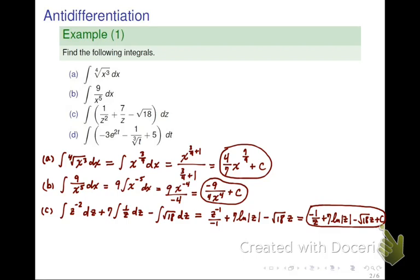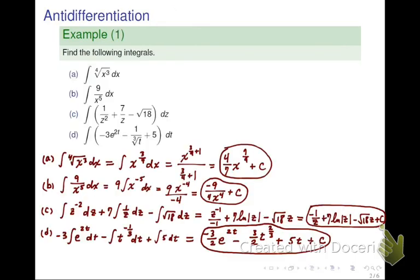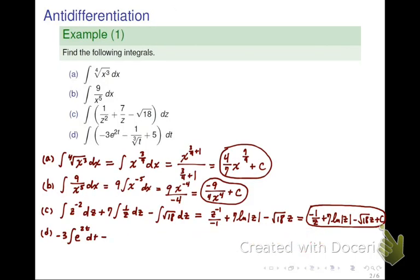For the fourth part, part D, we pretty much proceed with a similar process. We split the integral into three parts. The first part is simply integral of negative 3 e to the 2t. Remember to pull out that coefficient in front of the integral sign. For the second part, we're going to rewrite that using the power rule.